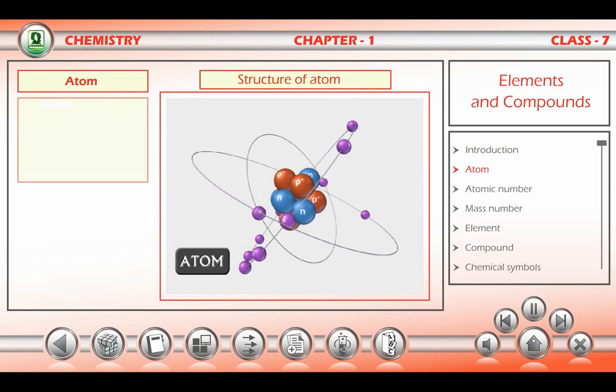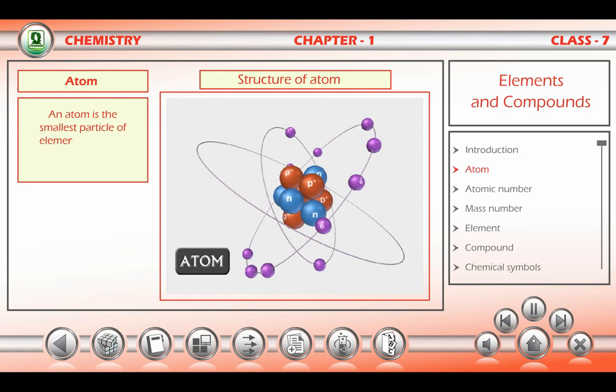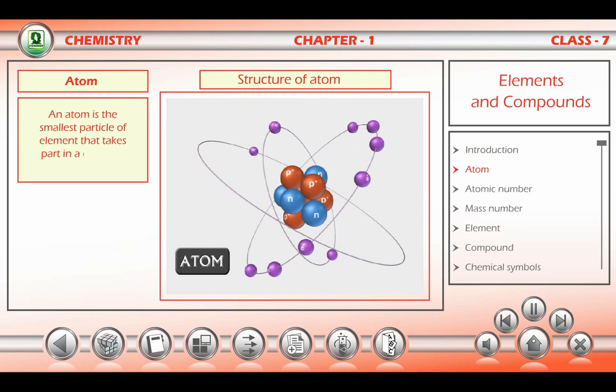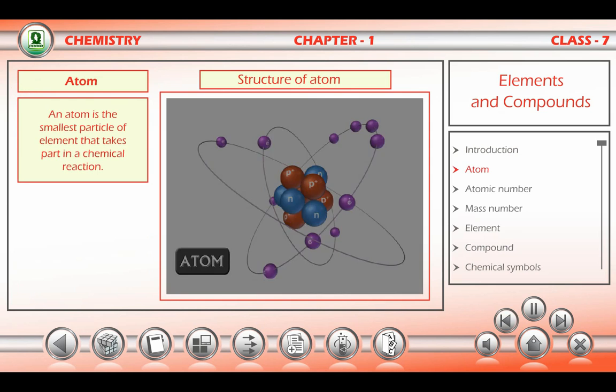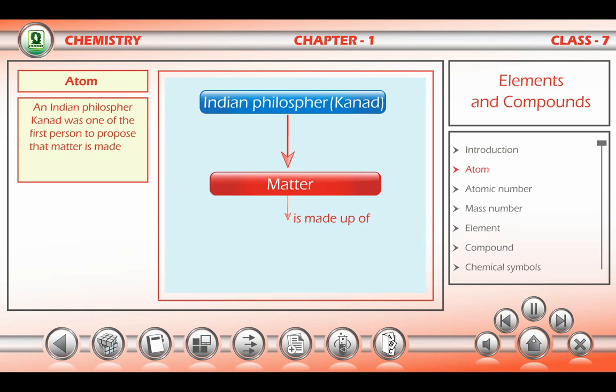Atom: An atom is the smallest particle of element that takes part in a chemical reaction. An Indian philosopher, Kannat, was one of the first persons to propose that matter is made up of very small particles called parmanu. John Dalton called these particles atoms.